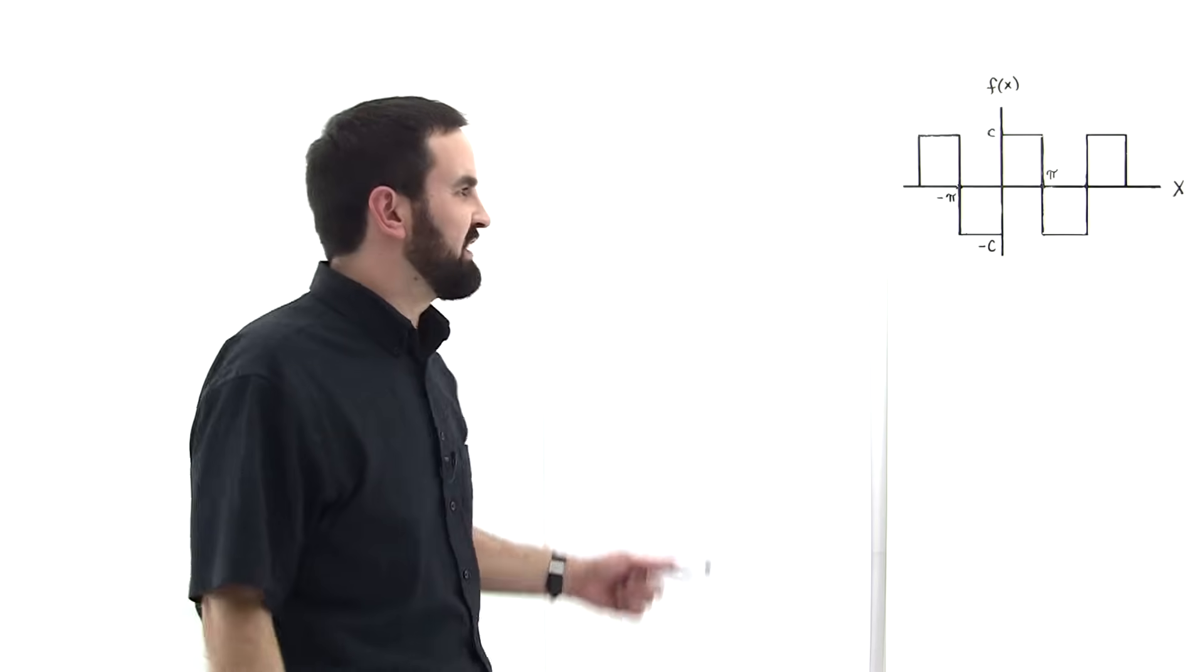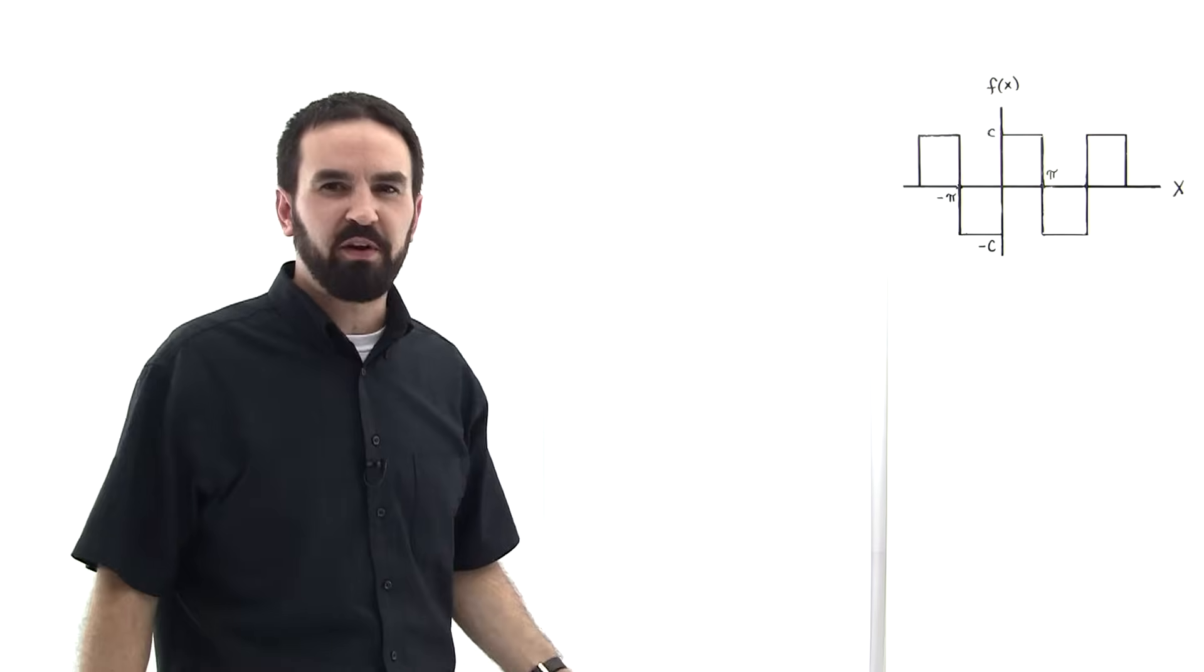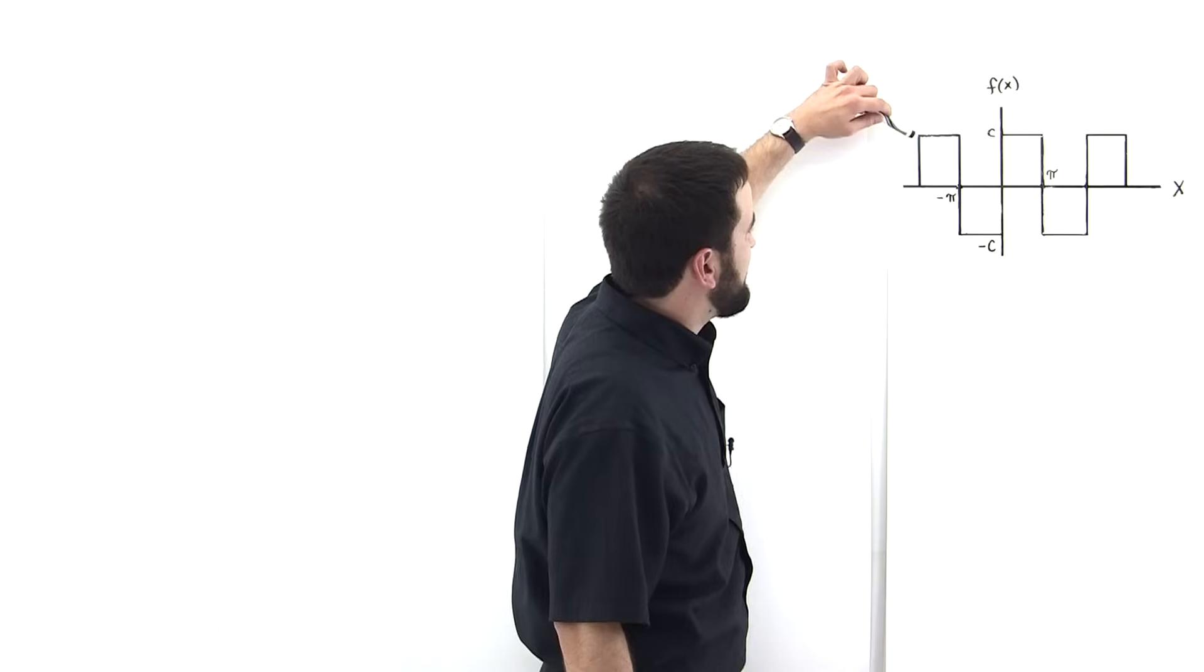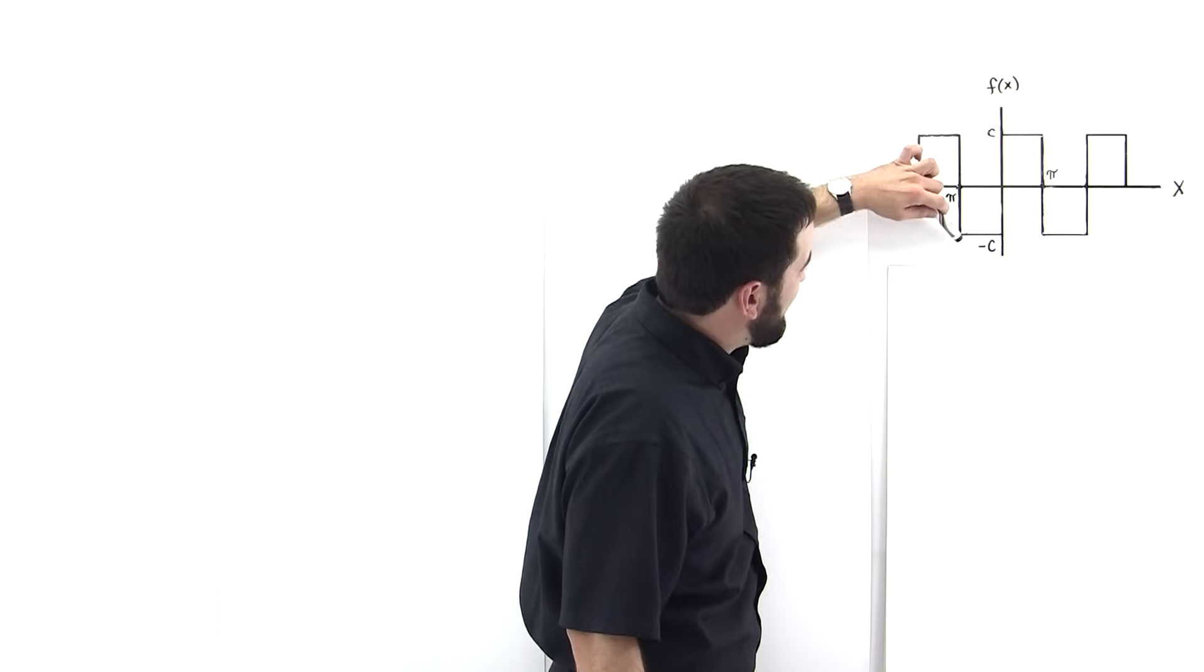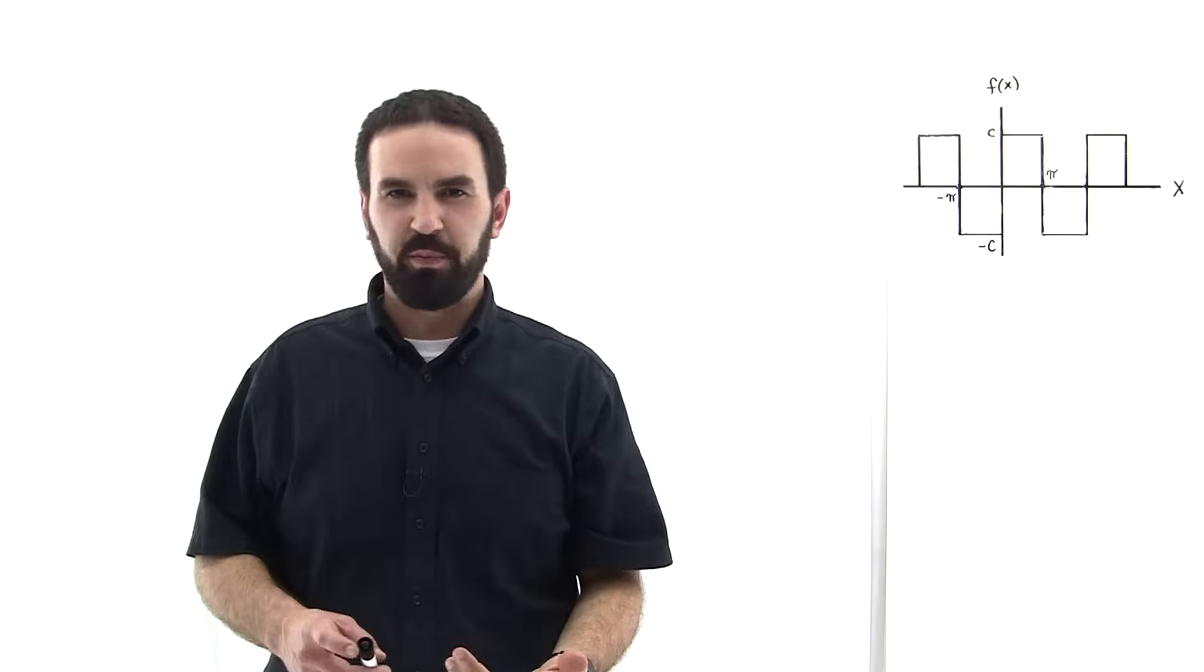What if we were charged with the task of modeling this function mathematically? We see that this function is periodic and that it's a step function, so that it comes up, over, down, over, up, over. And so we see that it is in fact periodic.